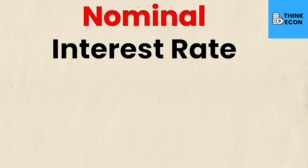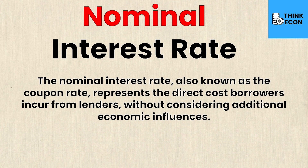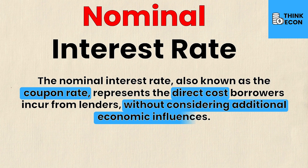The nominal interest rate is also known as the coupon rate, which represents the direct cost borrowers incur from lenders without considering additional economic influences. For example, if you walk into a car dealership and they say there is a loan on a car you could get for 6.99%, that would be the nominal interest rate. Or maybe you're saving money in a GIC and it says a 4% rate — that would be the nominal rate.